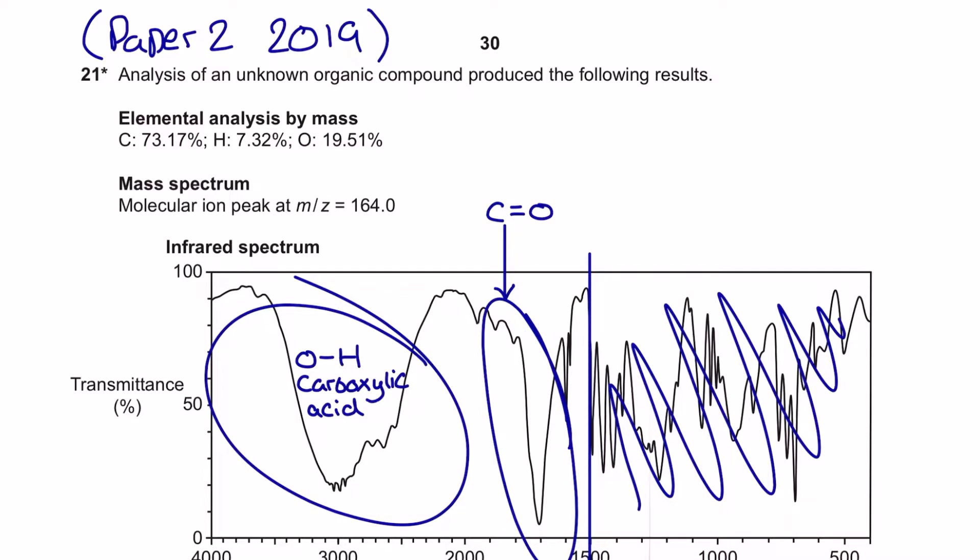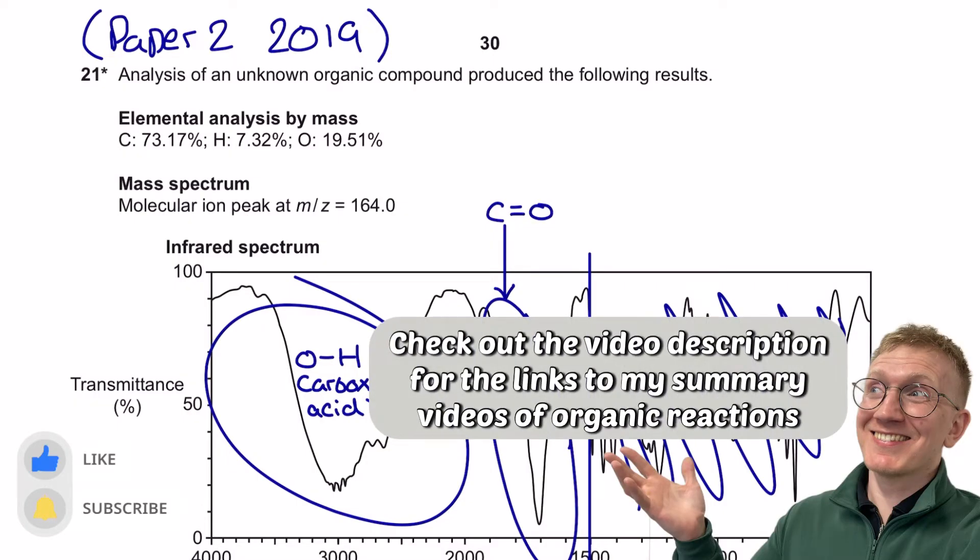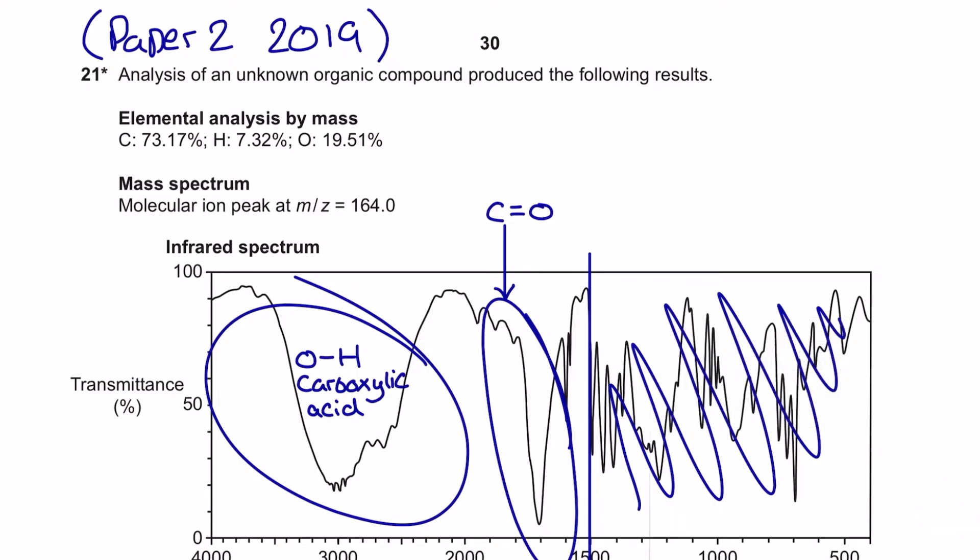Here we have another A-level chemistry spectroscopy exam question. It's a level of response question from the 2019 paper 2 exam on the OCRA specification in A-level chemistry. I'm going to take you through my question annotations and then show you my full layout for this question so you can get as many marks as possible in this level of response question.